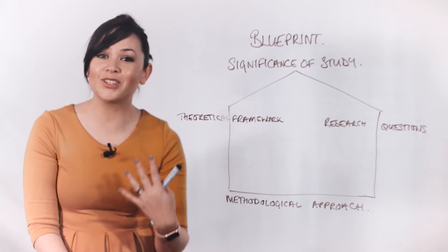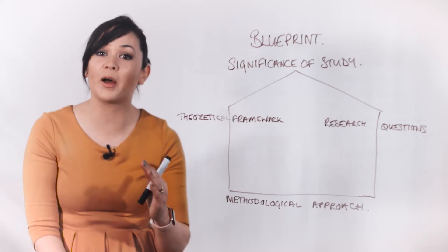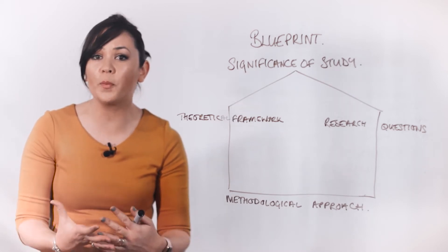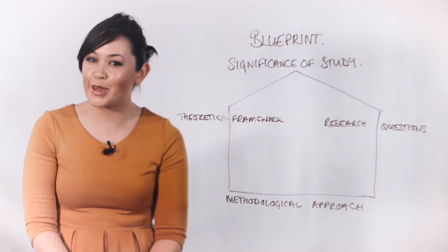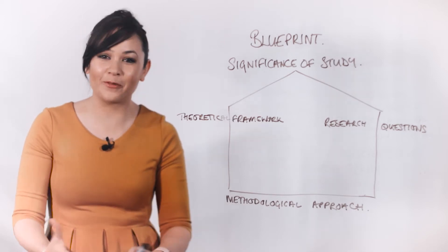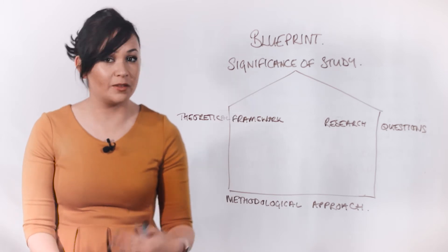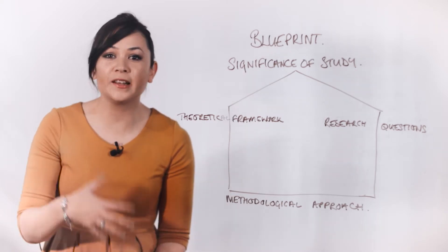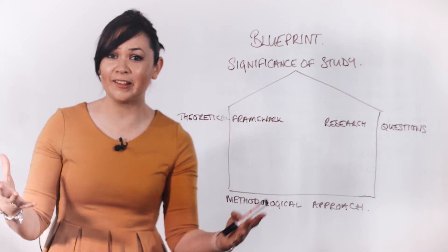Consider our example study: for the purpose statement you would need to retain your focus on the use of risk assessment in inpatient settings as a means of reducing violence exhibited by patients. If you were to go off with a purpose focused on inpatient clinicians' beliefs about medication use to control patient behavior, that wouldn't really be aligned with your problem. The alignment video provides much more information about how to achieve this correspondence between the different components of your study blueprint.